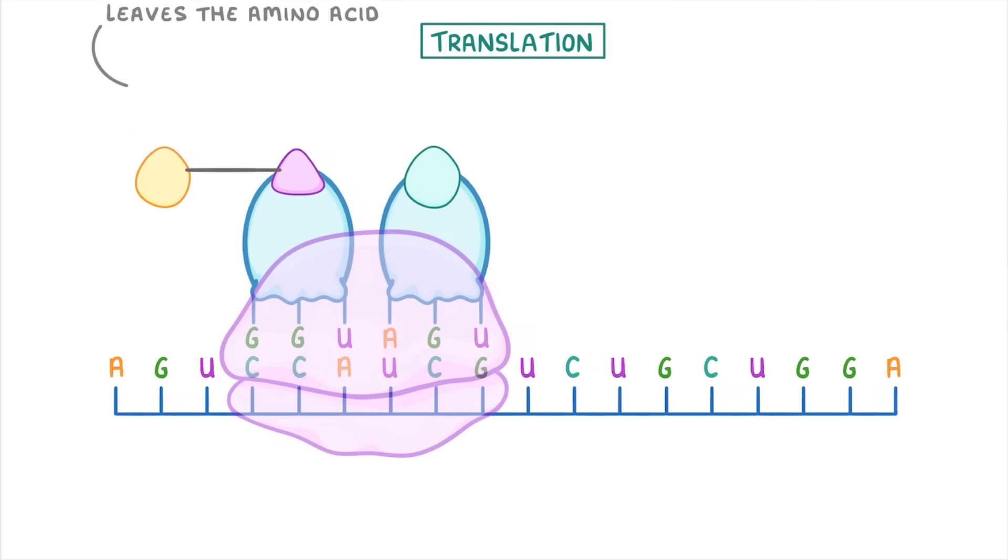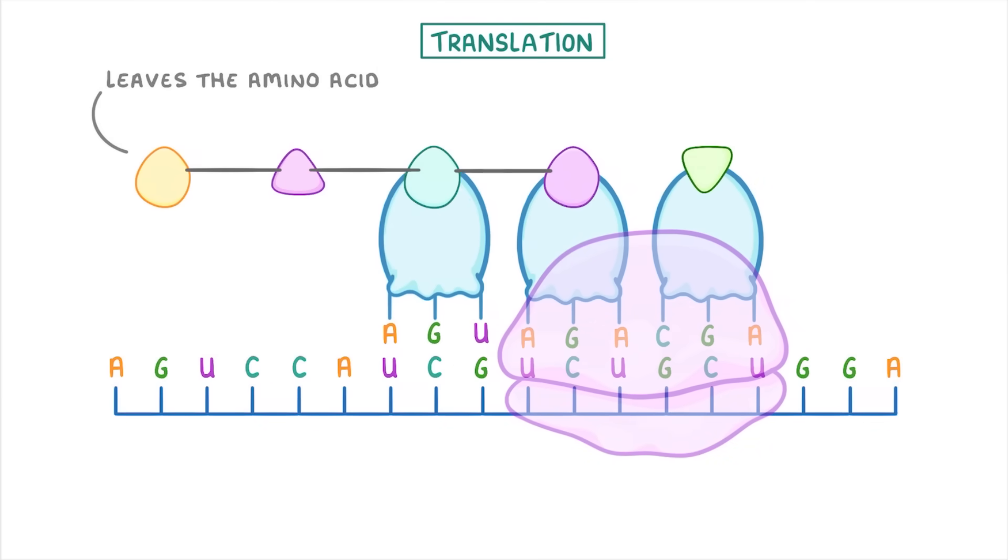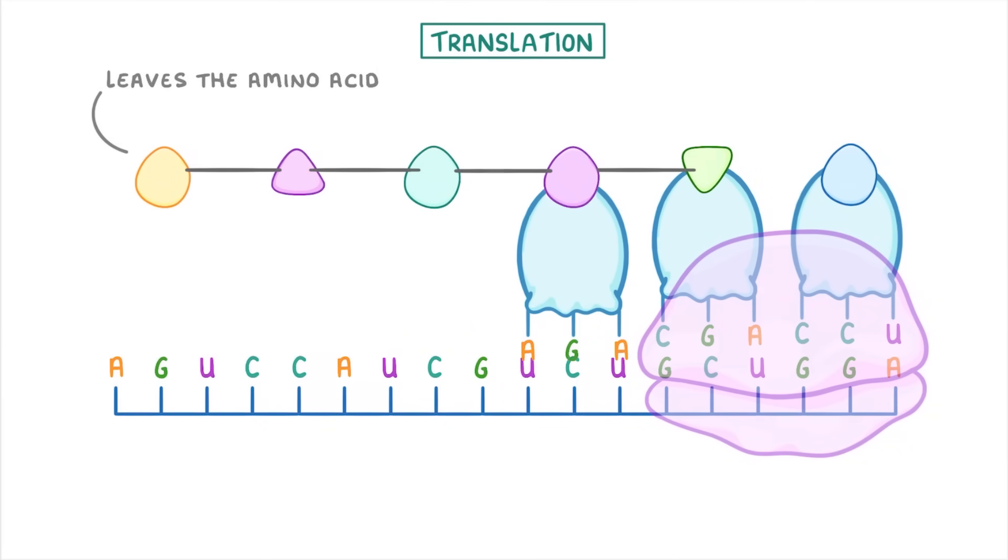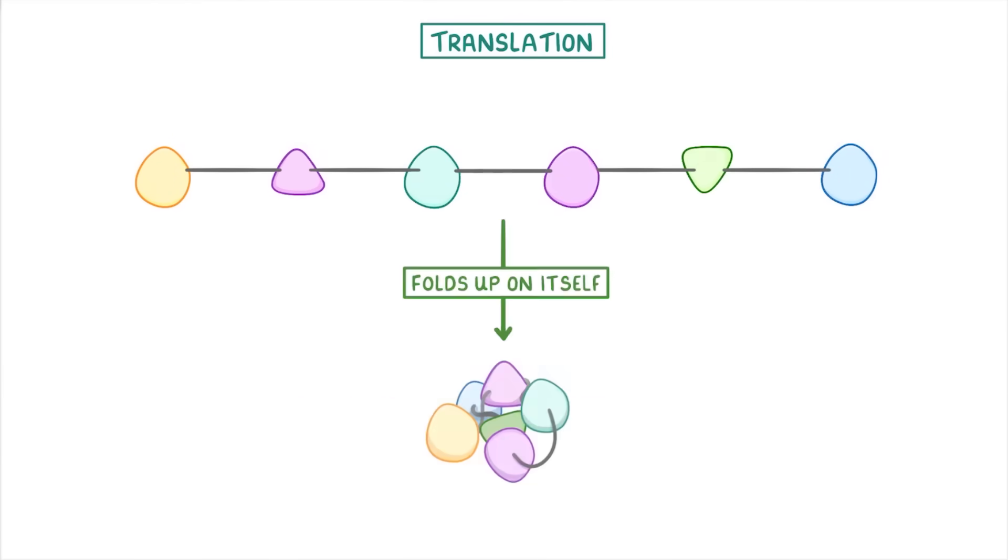But importantly, it leaves the amino acid behind. This same process then repeats all the way along the chain until the ribosome reaches the very end and has joined together a complete chain of amino acids. At this point, the amino acid chain will detach from the ribosome. And then finally, the chain can fold up on itself to form a protein.